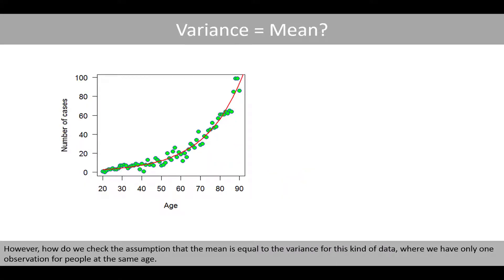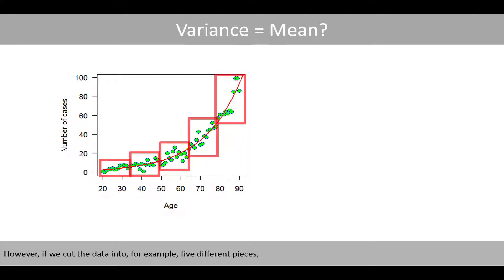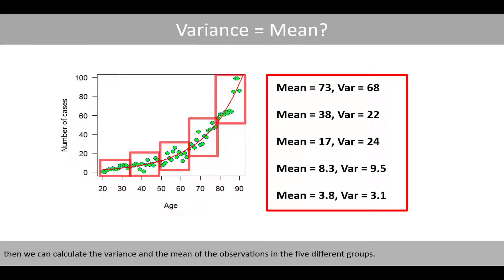However, how do we check the assumption that the mean is equal to the variance for data where we have only one observation for people at the same age? For example, the observed number of cases of people at age 70 is about 30 in this population. Since we only have one data point for this age category, it is impossible to estimate the variance. However, if we cut the data into, for example, five different pieces, then we can calculate the variance and the mean of the observations in the five different groups.